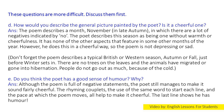These questions are more difficult — discuss them first. Question D: How would you describe the general picture painted by the poet? Is it a cheerful one? Answer: The poem describes November in late autumn, in which there are a lot of negatives indicated by 'no'. The poet describes this season as being one without warmth or cheerfulness, having none of the aspects that feature in other months. However, he does this in a cheerful way, so the poem is not depressing or sad.